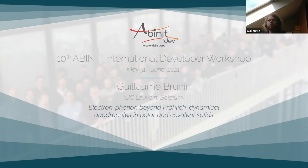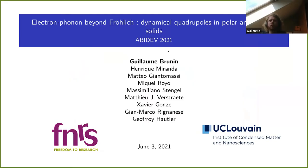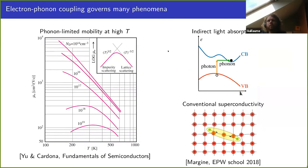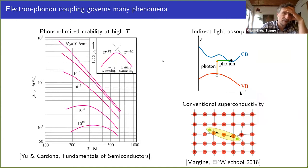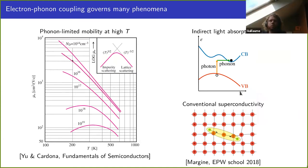Thank you for the introduction. I will talk about our recent findings related to the ab initio computations of electron-phonon coupling quantities, and more specifically related to dynamical quadrupoles. I'll go relatively quickly on the introduction since this is already the fourth talk on electron-phonon coupling. As you know, electron-phonon coupling plays an important role in many phenomena like superconductivity, indirect light absorption, or the intrinsic mobility limited by scattering of electrons by phonons, as Matteo explained in the previous talk.